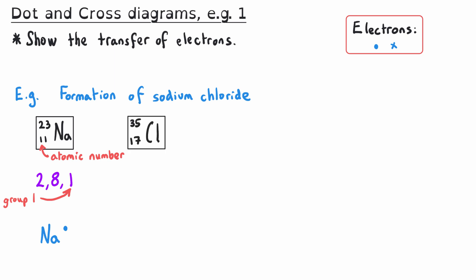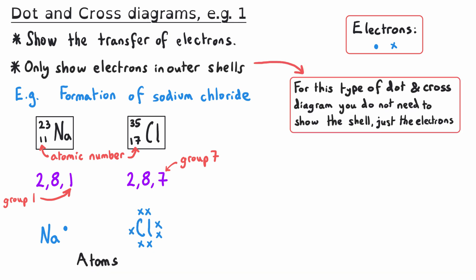Chlorine has an atomic number of 17 — so 17 protons and 17 electrons — giving an electronic structure of 2,8,7 and 7 electrons in its outer shell, placing it in group 7. In the dot and cross diagram for chlorine, those 7 outer shell electrons are shown as crosses. For GCSE chemistry, only the outer shell electrons need to be shown, which makes the diagram much clearer. When these elements bond, the one outer shell electron of sodium is transferred to the outer shell of chlorine, so both atoms now have a full outer shell — sodium becomes 2,8 and chlorine becomes 2,8,8.